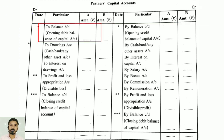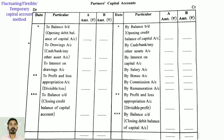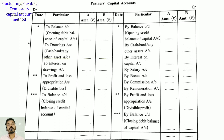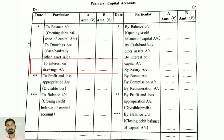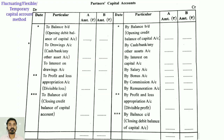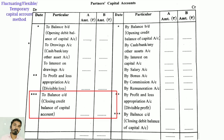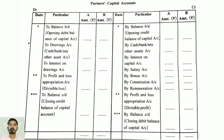On the debit side: 'To balance brought down' represents the opening debit balance of the capital account. Next, 'To drawing account' — cash, bank, or any other assets account. Next, 'To interest on drawings account.' Next, 'To profit and loss appropriation account' for divisible loss. And 'Balance carry forward' represents the closing credit balance of the capital account, meaning the credit side total is greater, so the difference is placed on the debit side.